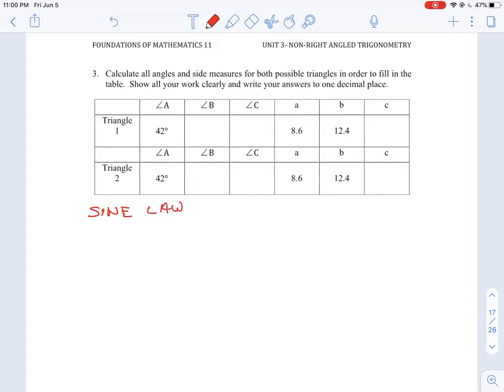We have sine of angle A all over length A is equal to sine of angle B all over length B, which is also equal to sine of angle C all over length C.